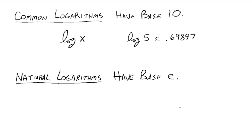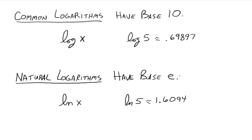The second special type is natural logarithms, which have base e. The notation is ln of x. Using a calculator, the natural log of 5 is approximately 1.6094, meaning e raised to 1.6094 gives you about 5 — a different number than the common log because the base is e instead of 10. Make sure you watch the next video on properties of logarithms. Study well, and let me know if you have any questions.